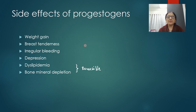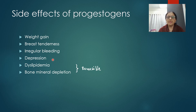Common side effects of oral progestogens include weight gain, breast tenderness, irregular or breakthrough bleeding, depression (severe depression may occur in up to 1% of patients, potentially requiring treatment discontinuation), dyslipidemia, and bone mineral depletion. Fortunately, dyslipidemia and bone mineral depletion are reversible upon stopping treatment.